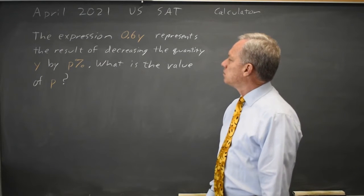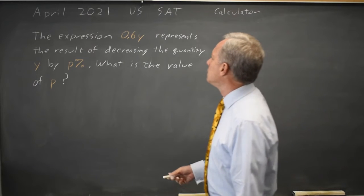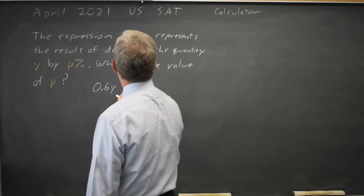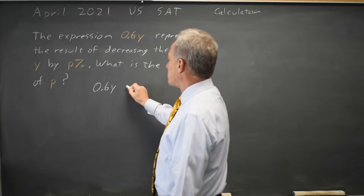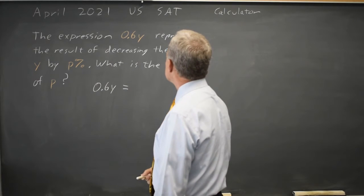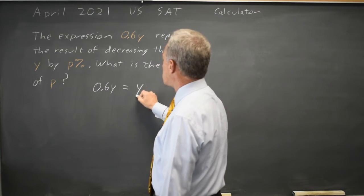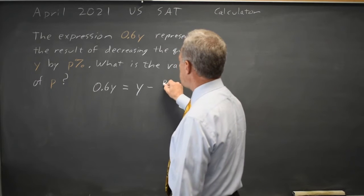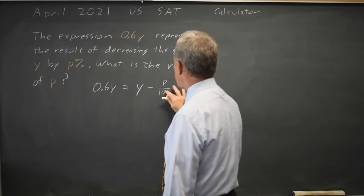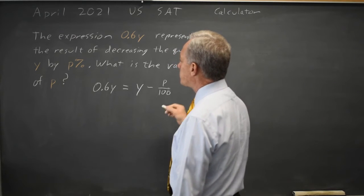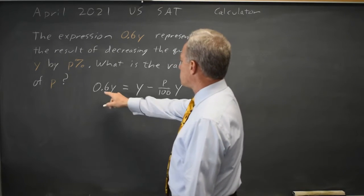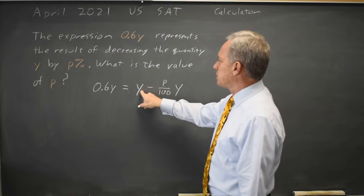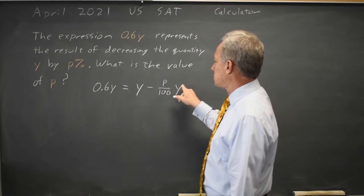College Board gives us a word problem and asks us to solve for P. So they say 0.6Y represents the result of, that's another way of saying is, and is means equals, decreasing the quantity Y, so that's Y minus, and decreasing that quantity by P percent. P percent is P over 100, and that implicitly means by P percent of Y. So 0.6Y represents the result of decreasing the quantity Y by P percent of Y.